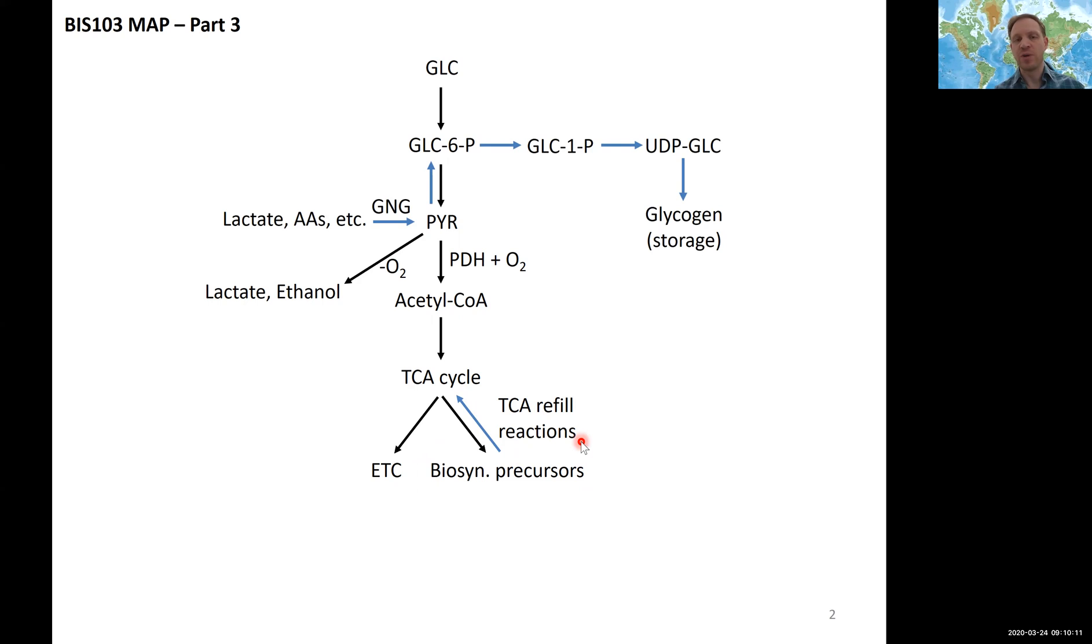We had talked about gluconeogenesis, GNG, how we can come from non-carbohydrate resources such as lactate or amino acids and can generate sugars again going back through gluconeogenesis up to glucose-6-phosphate.